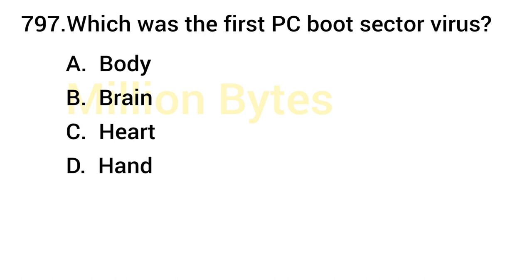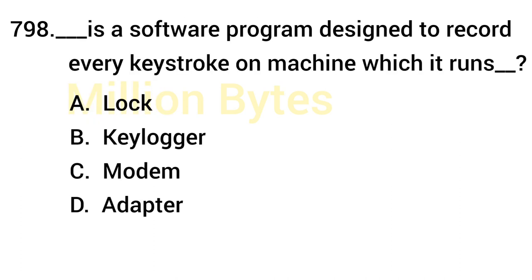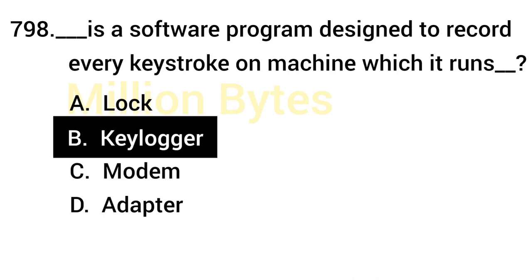A method of ensuring the integrity of a document is called Digital Signatures. Which was the first PC boot sector virus? Brain. A software program designed to record every keystroke on the machine it runs is called a Keylogger.